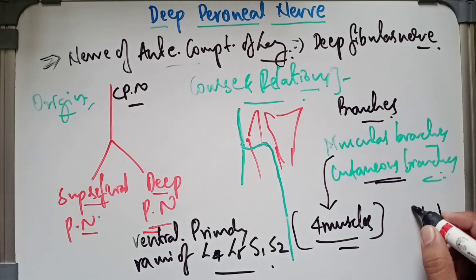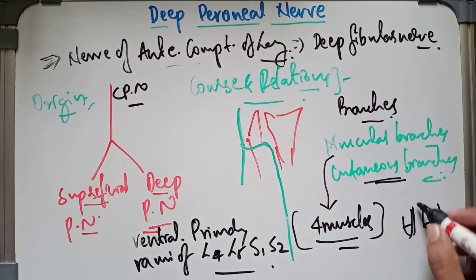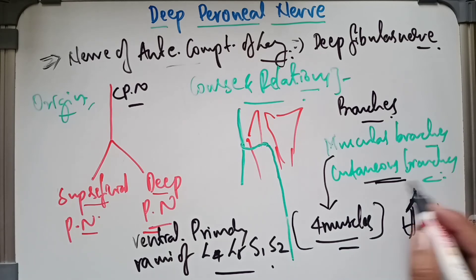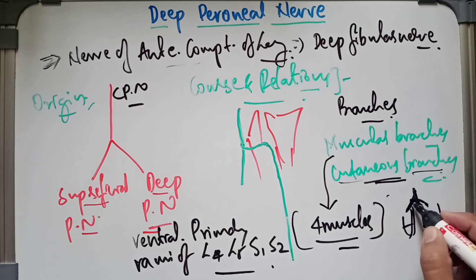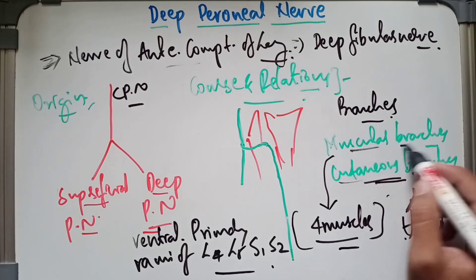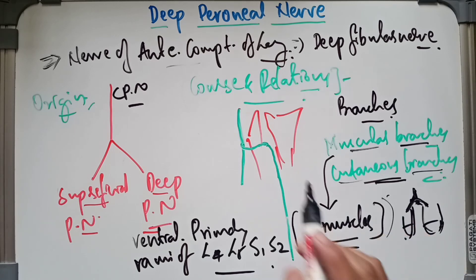When it comes to the cutaneous branches, the deep peroneal nerve supplies the skin of the first interdigital cleft — that is, the web space between the big toe and the second toe.